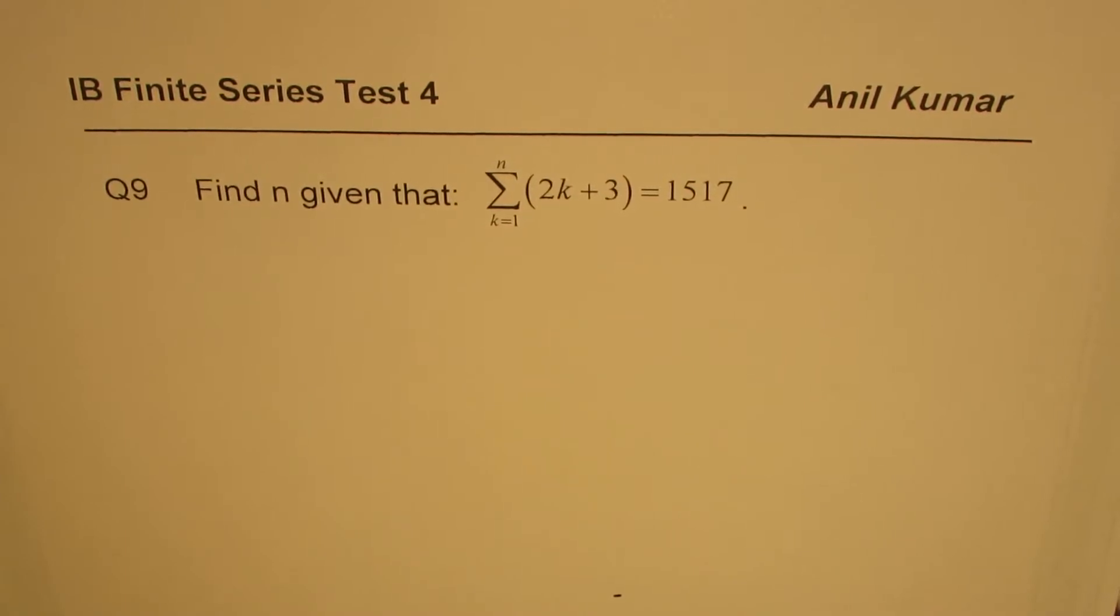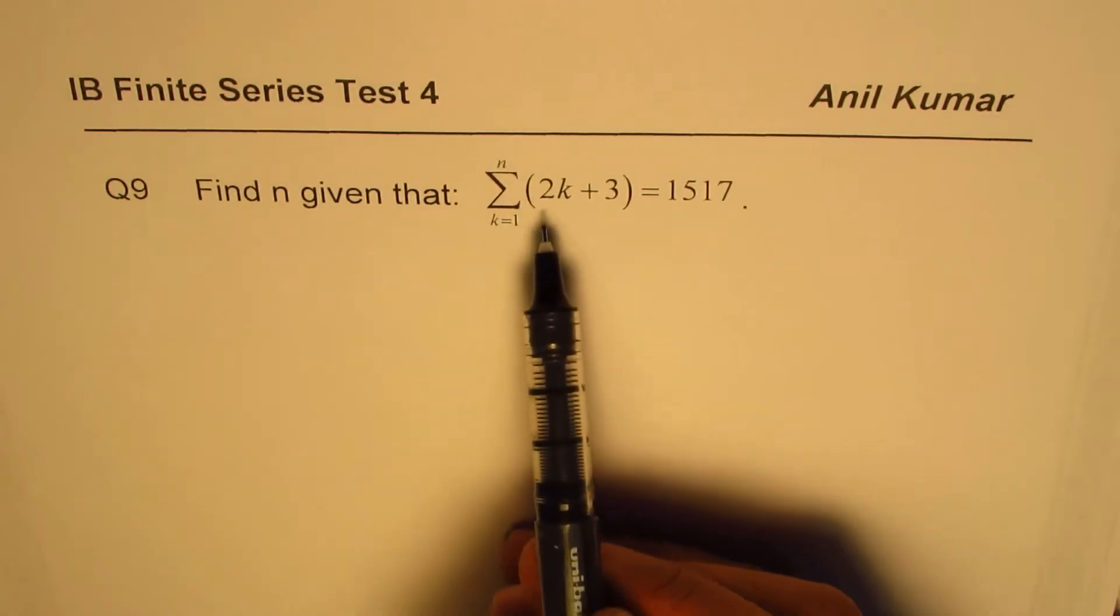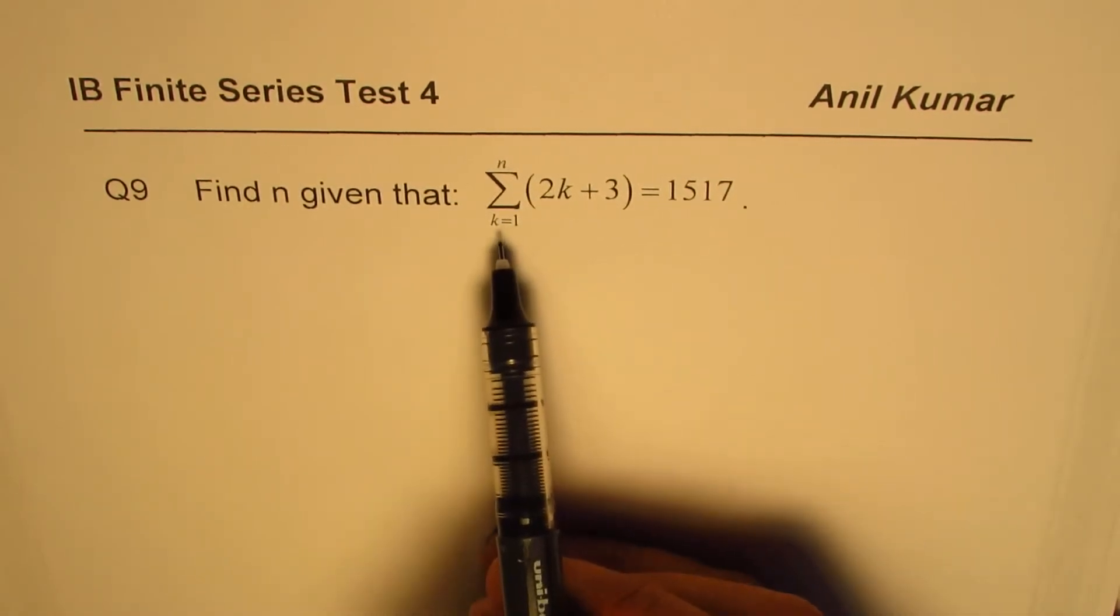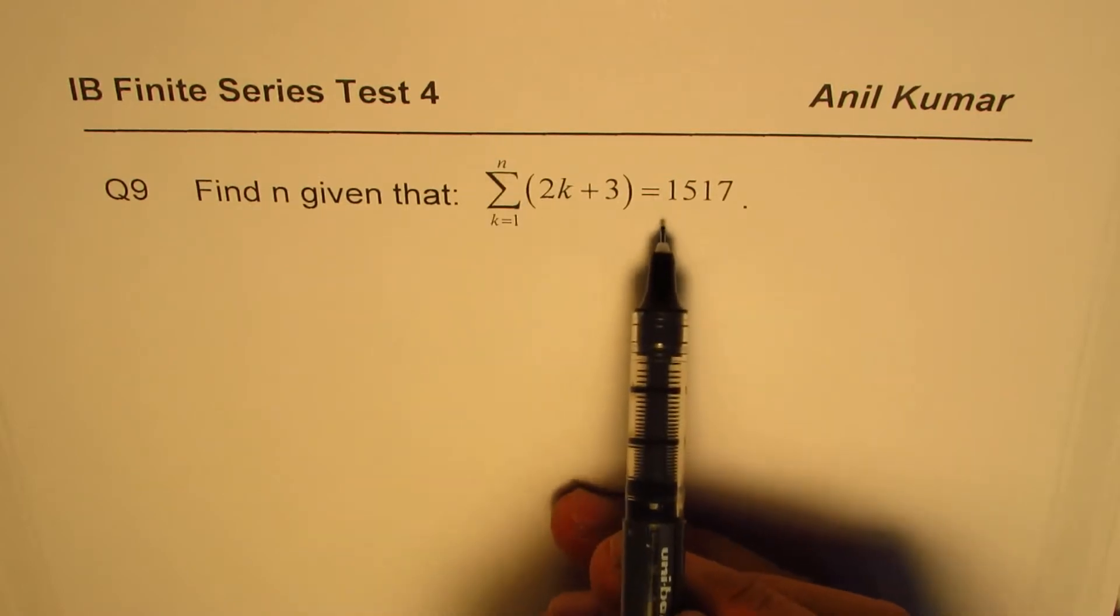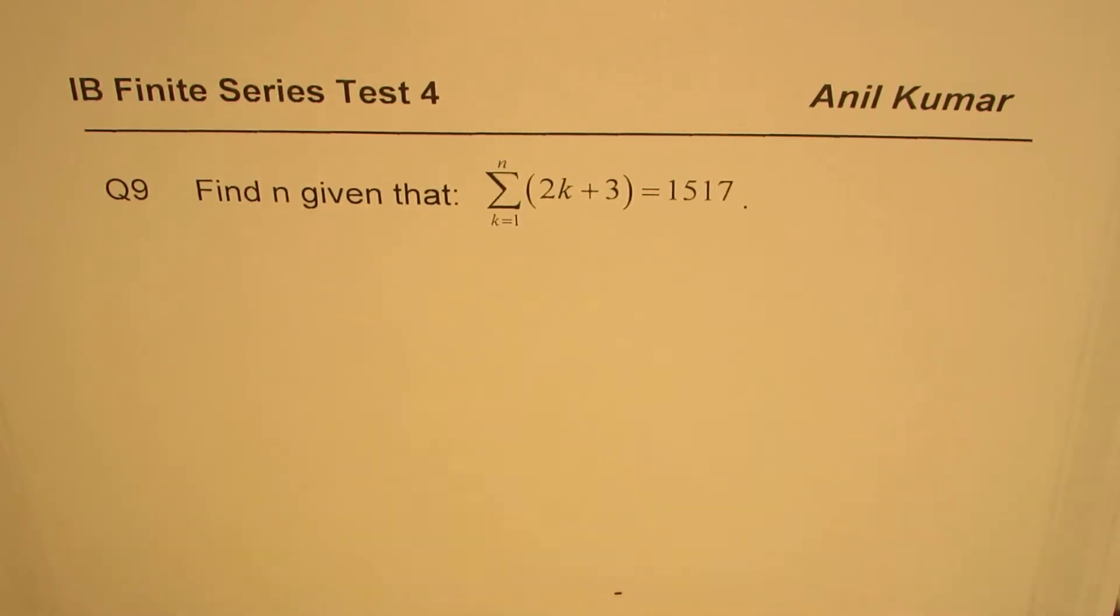The question here is find n given that sum of 2k plus 3 where k limit is from 1 to n is 1517. You can pause the video, answer the question and then check with my solution.